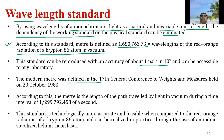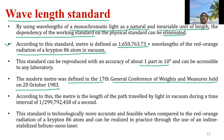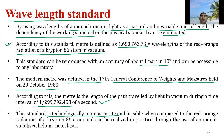The modern meter was redefined at the 17th General Conference of Weights and Measures held in October 1983. According to this definition, the meter is the distance traveled by light in vacuum during a time interval of 1/299,792,458 of a second. This standard is technologically more accurate and feasible compared to the krypton-86 atom definition.